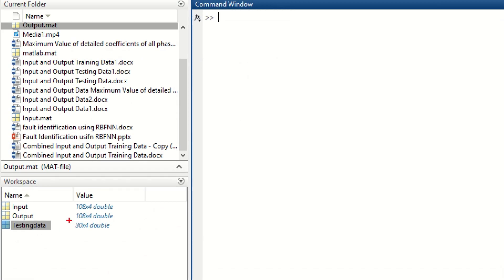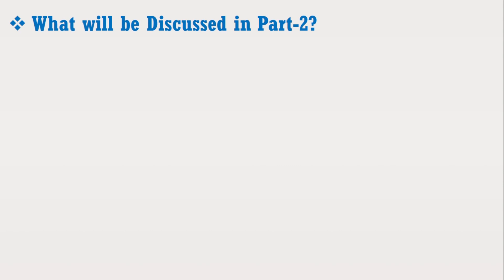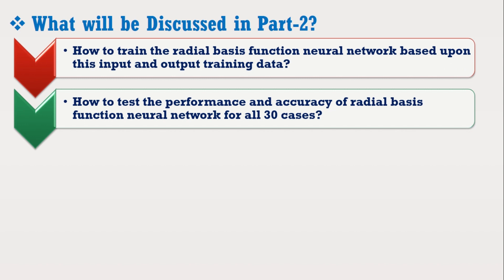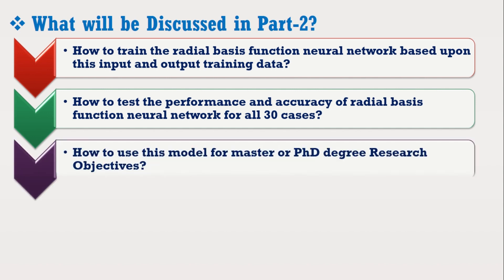Due to the limitation of time, I will discuss all the next steps of this topic in the second part of this video. In the next video, I will discuss: how to train the Radial Basis Function Neural Network based upon this input and output training data; after successful training, how to test its performance and accuracy for all 30 cases; and how to use this model for Master's or PhD degree research objectives. I have uploaded the PDF, input-output training and testing data, as well as the Simulink model and required MATLAB programs as links in the description section of this video. You may download them from there.